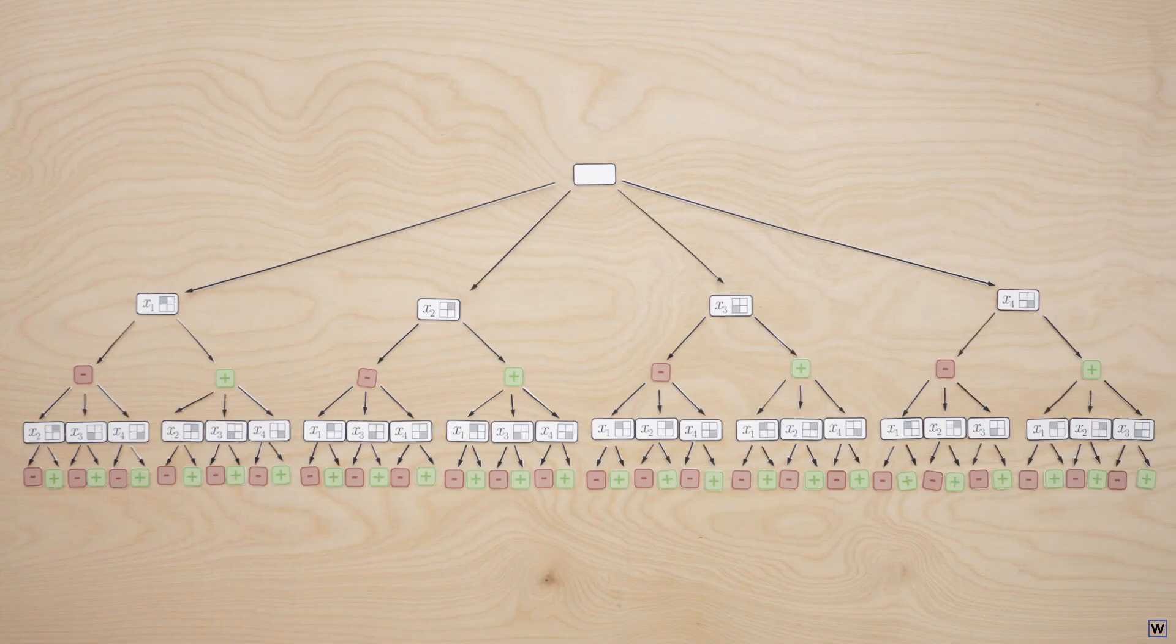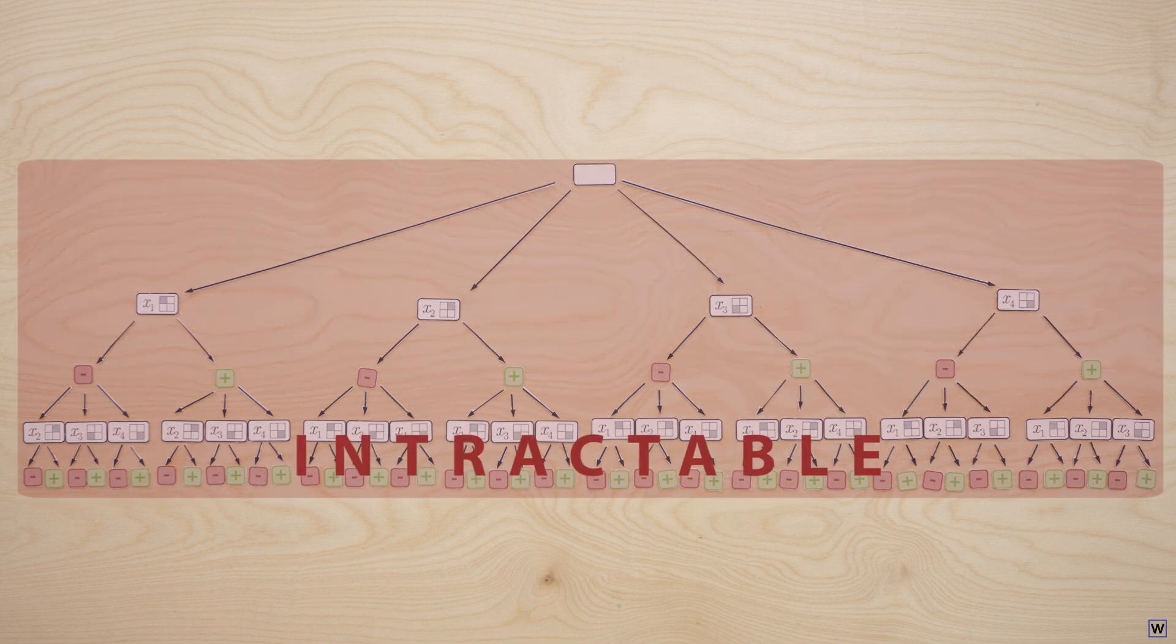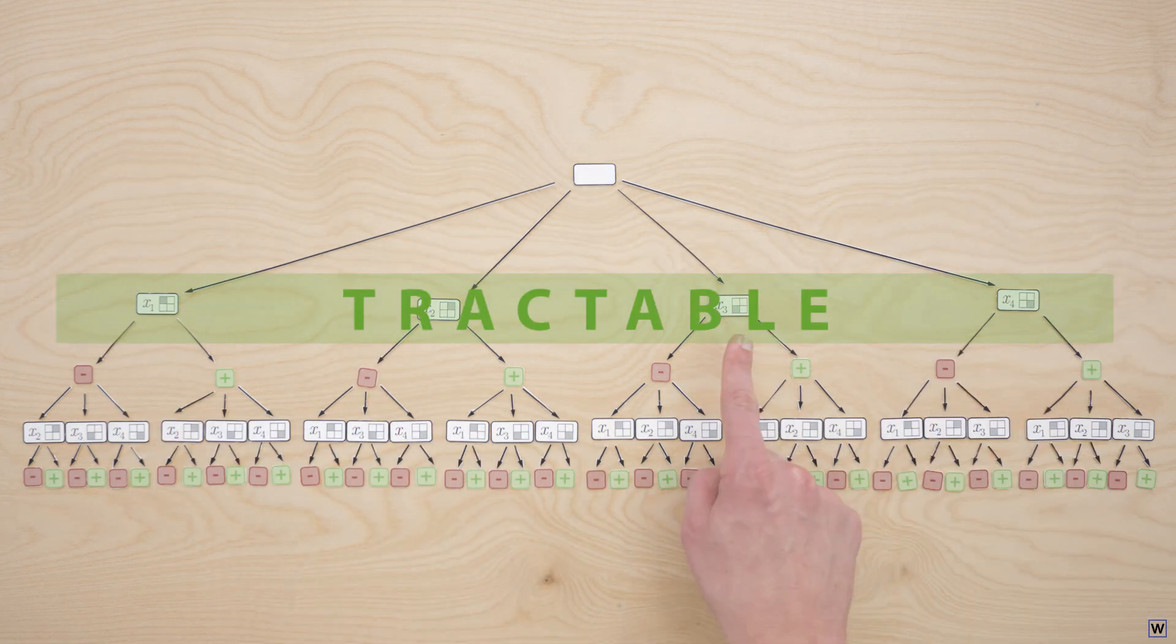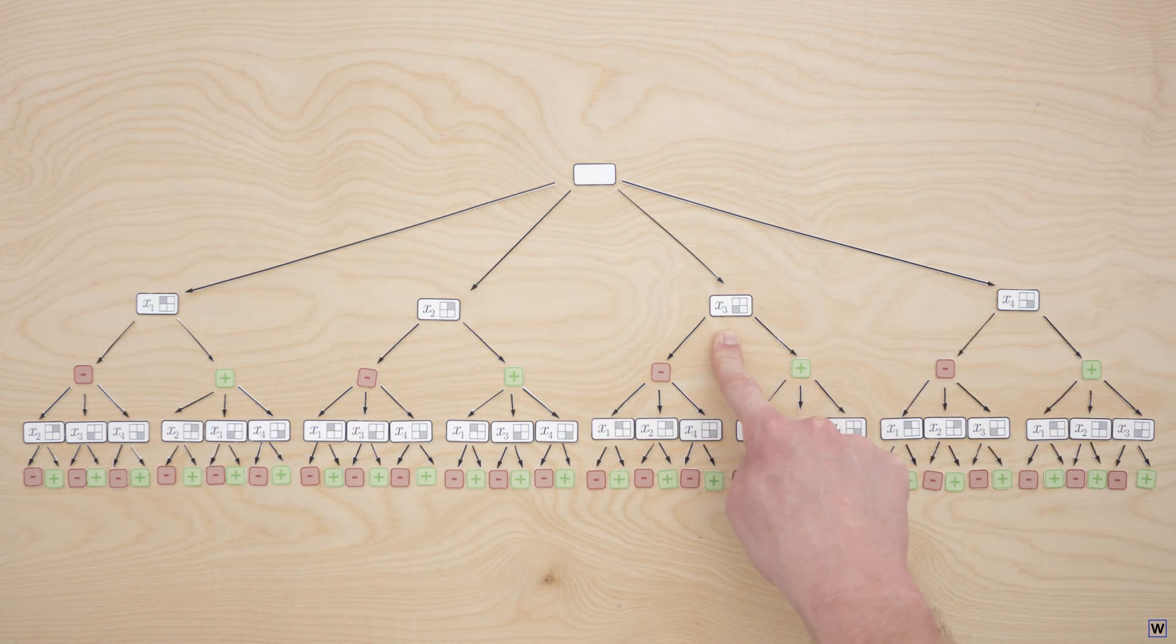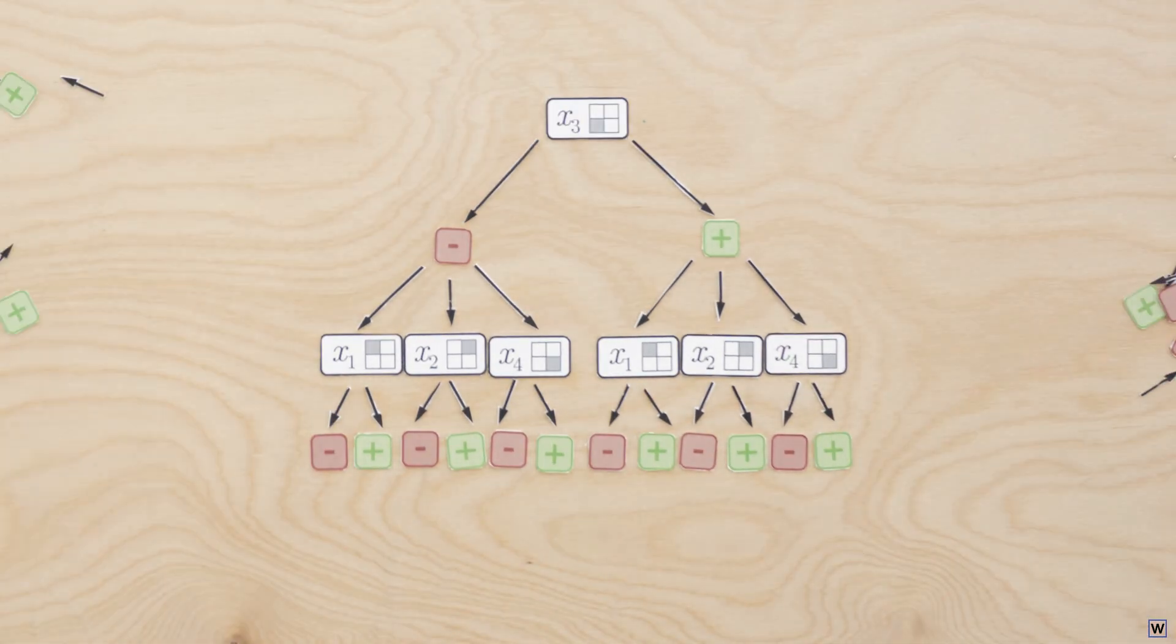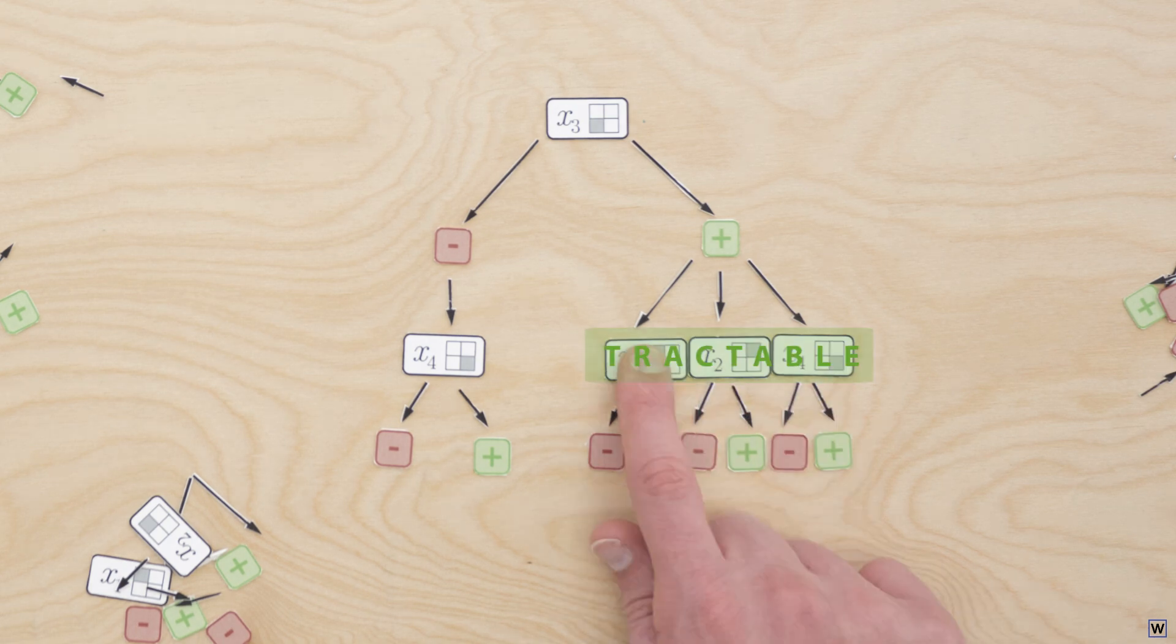The beauty of this greedy approach is that it cleanly, although imperfectly, breaks apart our intractable search problem into tractable subproblems. Instead of searching through an exponentially large set of rules, all we need to do is choose which branch to further pursue at each level.